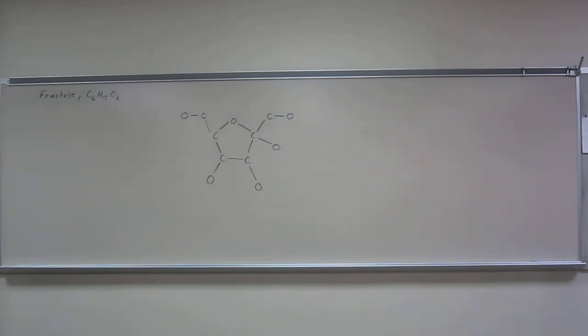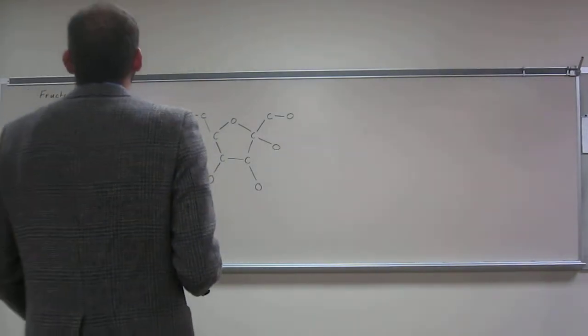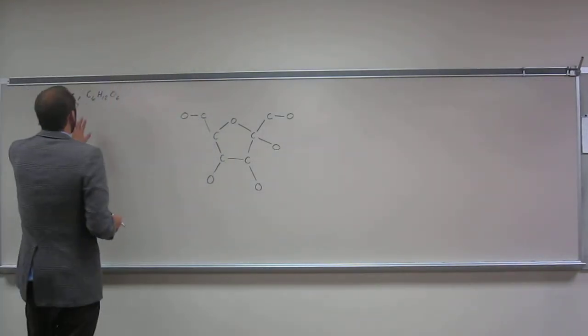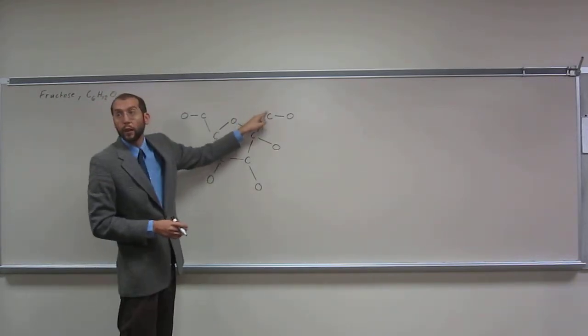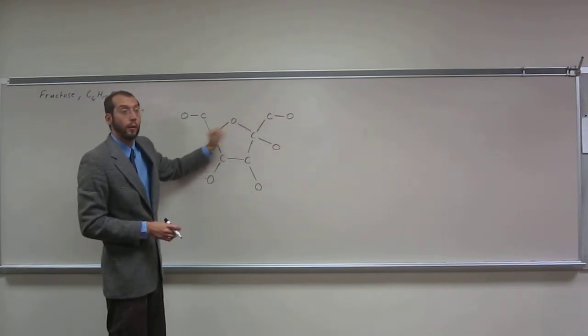So hopefully you guys see that we have a partial structural formula here, only showing, if you count them up, C6: 1, 2, 3, 4, 5, 6. So we've got all the carbons shown. Is everybody okay with that?